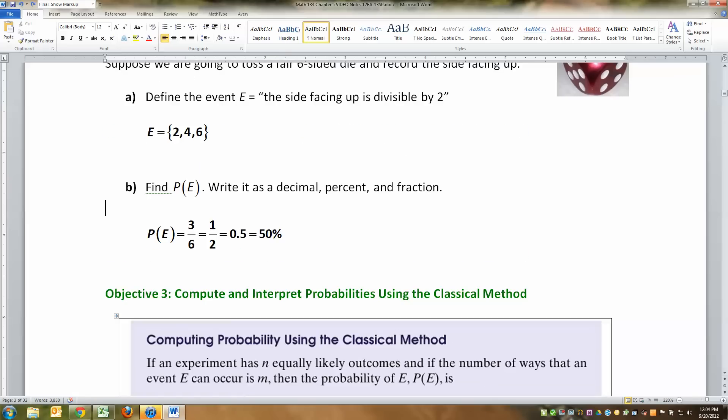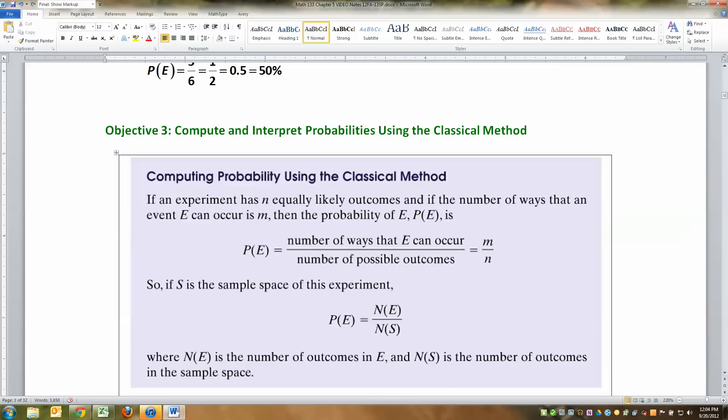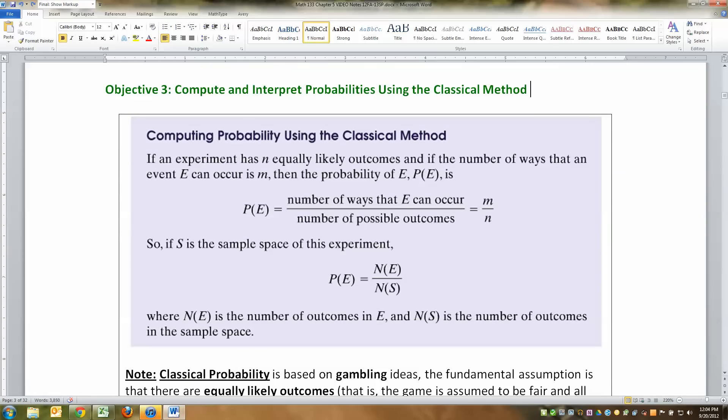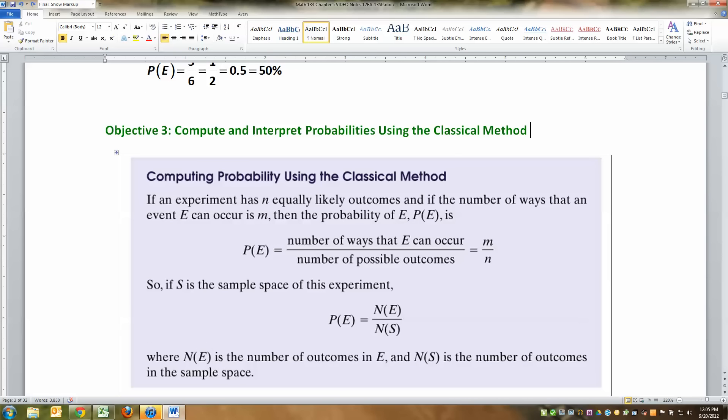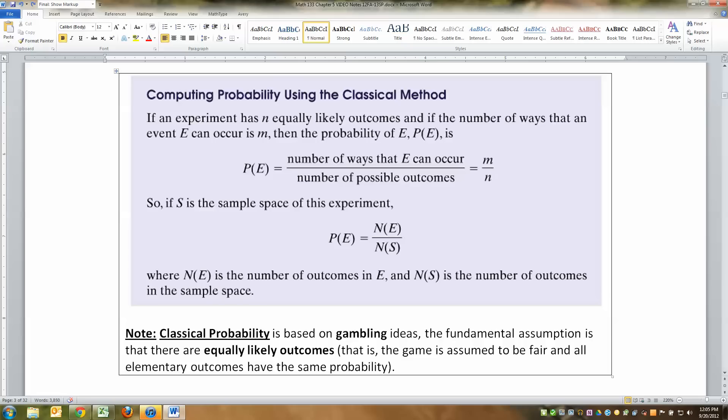What we just did there is something called a classical probability. You didn't roll the die and check things out. What you did was you imagined that all the sides of the die were equally likely, and then you figured out the number of ways that you could get E to occur, the number of ways you could get something divisible by two to occur. And you divided that three divided by the six. But it was all kind of in your head. It's all hypothetical.